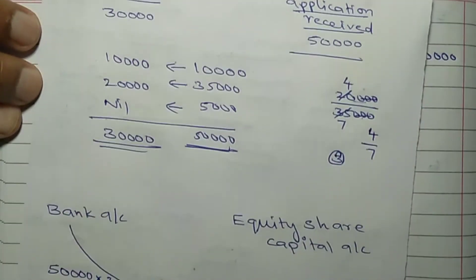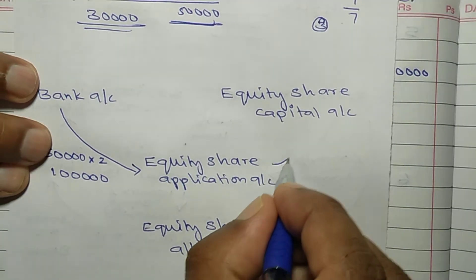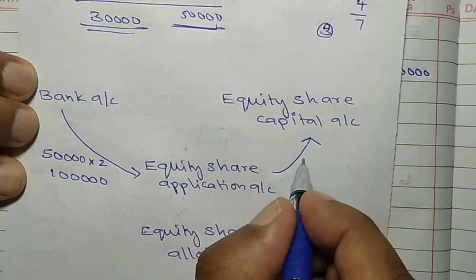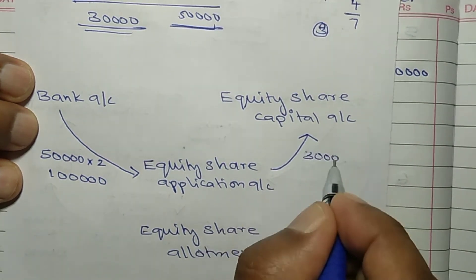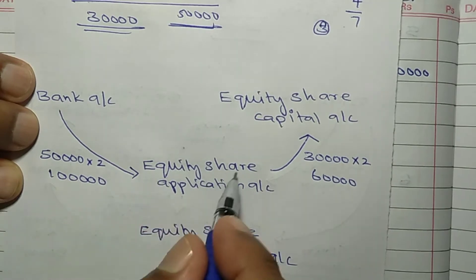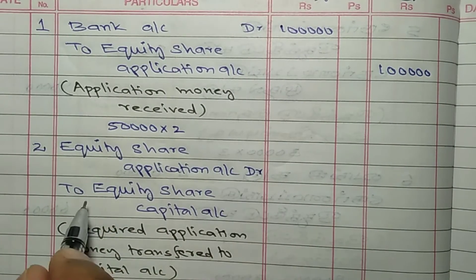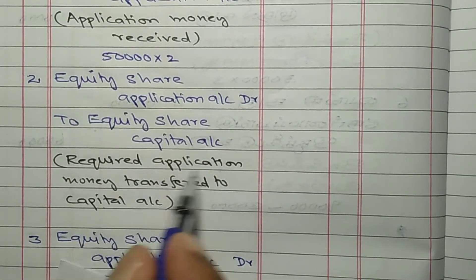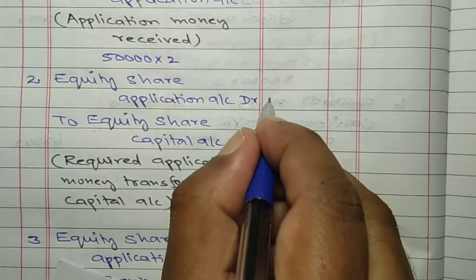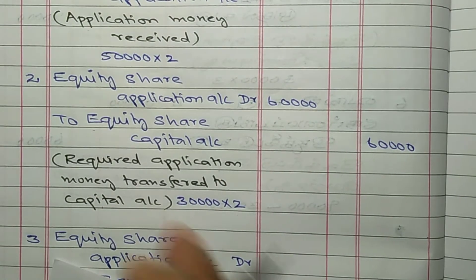Next, second entry: required application money transferred to capital account. Only 30,000 shares are required, so 30,000 into Rs 2 equals Rs 60,000. Equity share application account debit to equity share capital account, Rs 60,000 debit and Rs 60,000 credit.